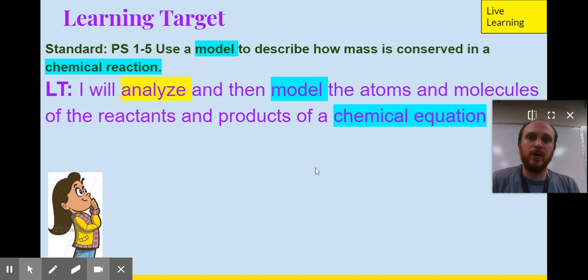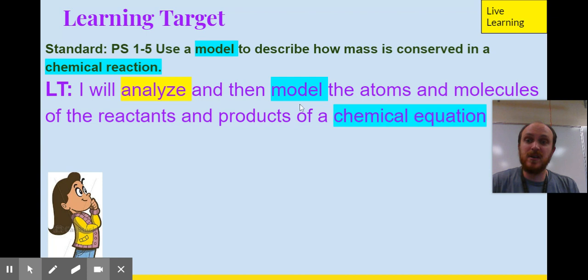So then let's keep moving. We're going to go back to the live learning. So these were breakout room slides you can see. So I'm going to have you guys do that in breakout rooms. But now back to the live learning. So today we're starting this new unit where we're using a model to describe how mass is conserved in a chemical reaction. So we need to figure out what that means. Mass is conserved, but we'll talk about it or today we're trying to figure out how to model chemical reactions. So we need to be able to do that in order to explain how mass is conserved. So today we're going to analyze and then we're going to model the atoms and molecules of the reactants and products. This is a good vocab for the day of a chemical equation.